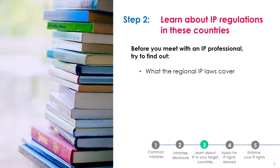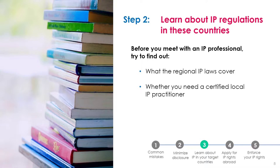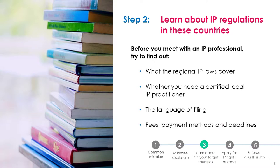Find out if you're required to be represented by a certified local IP practitioner, such as a nationally registered agent. In some jurisdictions, unless you have a registered business entity in that jurisdiction, only an authorized professional such as a local lawyer or IP agent can represent you and manage your filings. Determine what languages you may use to file your application. Finally, look into the various fees and how to pay them, as well as any time limits for filing for protection, paying fees and other deadlines.